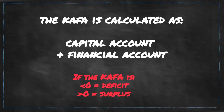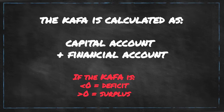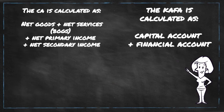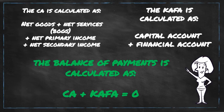Similar to the current account, if the CAFA value is less than zero there are more investment flows out of the country and we call that a deficit. But if it's a positive value, then there is investment flowing into the country and we call that a surplus. Finally, the balance of payments is calculated by simply adding the current account and the capital and financial account to equal zero.